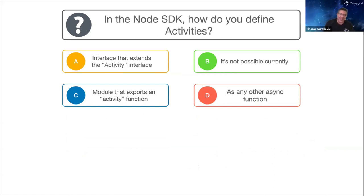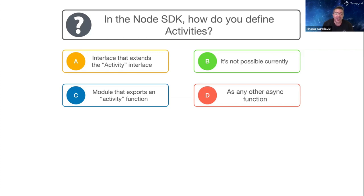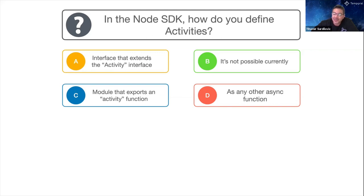In the Node SDK, how do you define activities? A, define an interface that extends the 'Activity' interface; B, it's not possible currently; C, define a module that exports an activity function; or D, you can define activities as any other async function in your code.